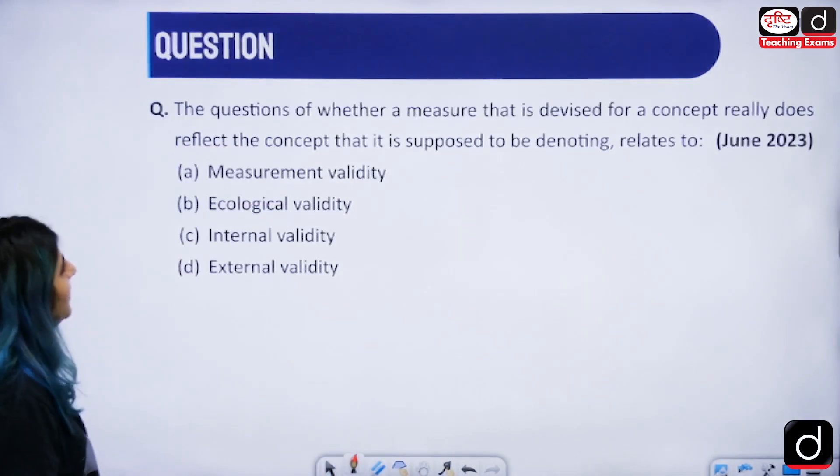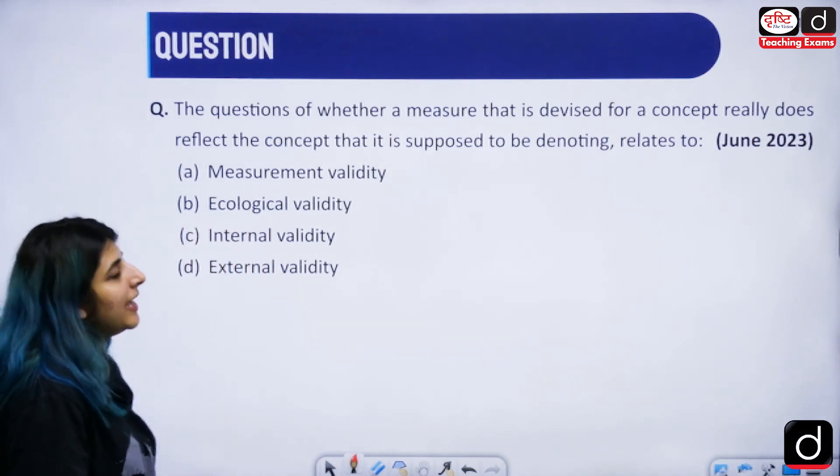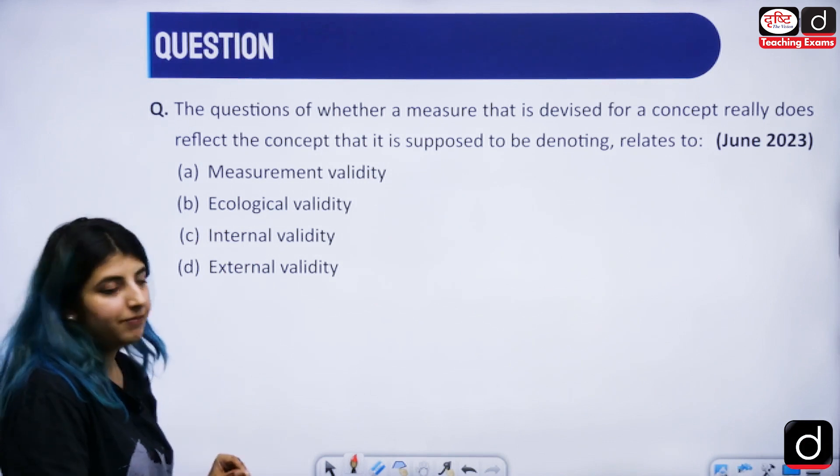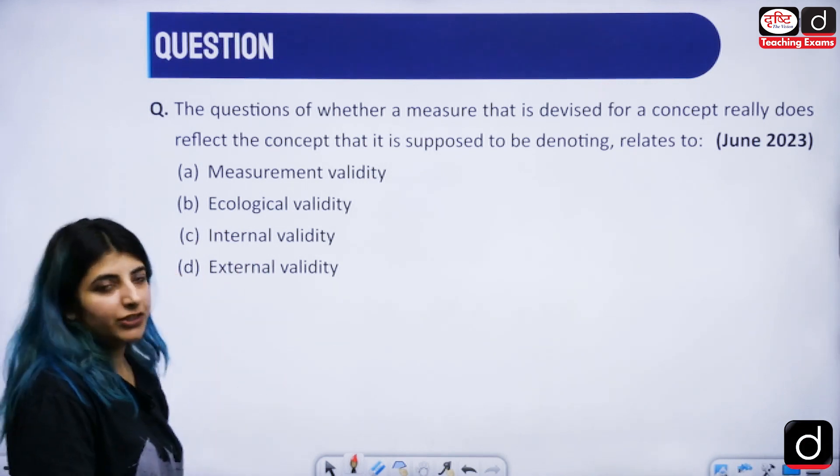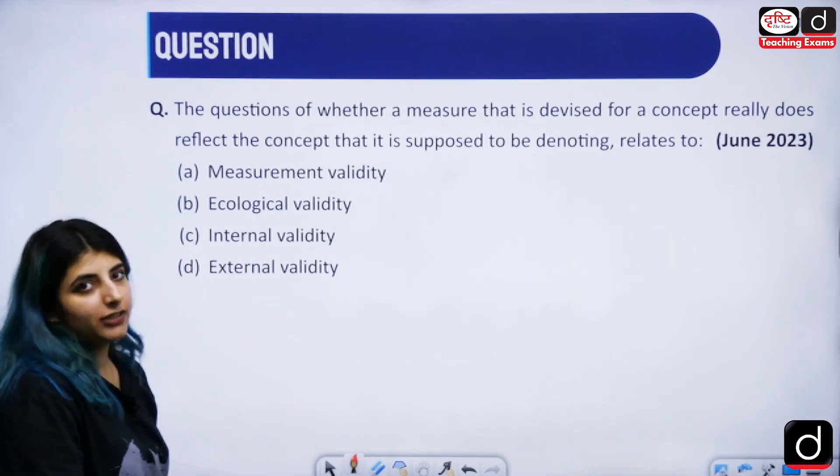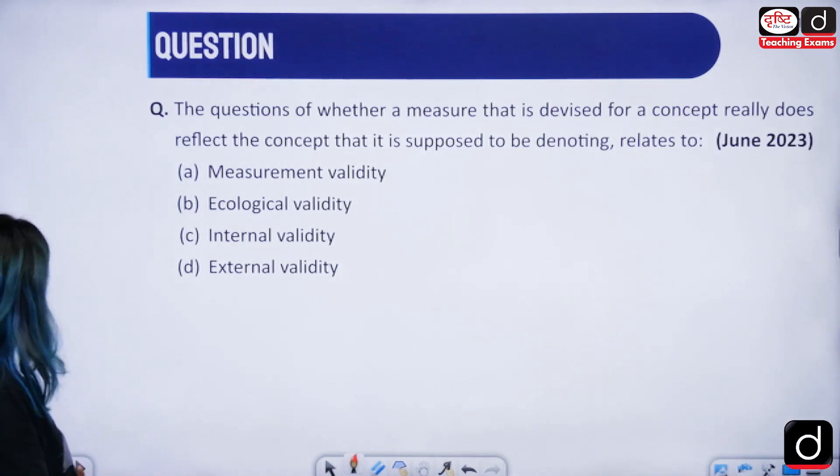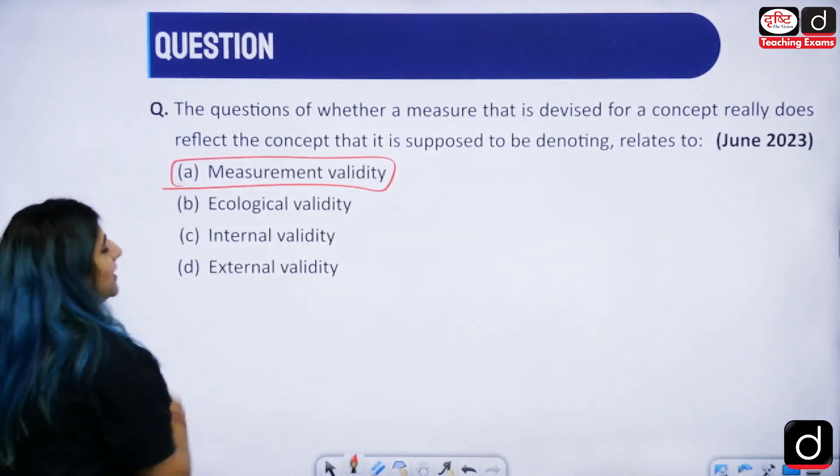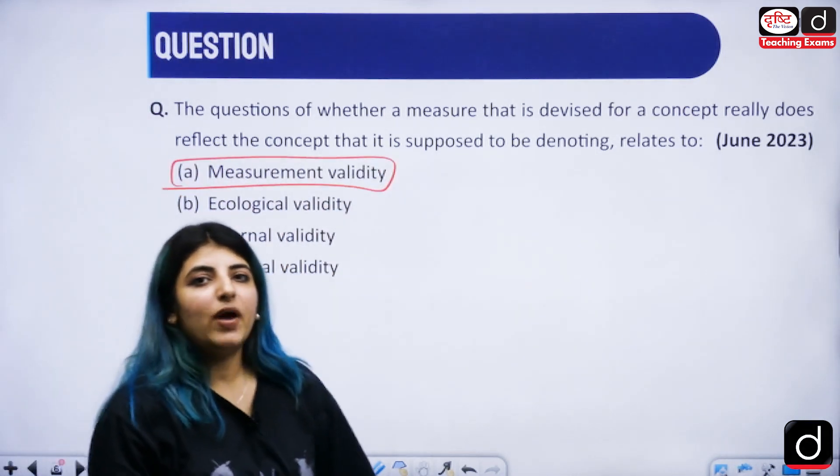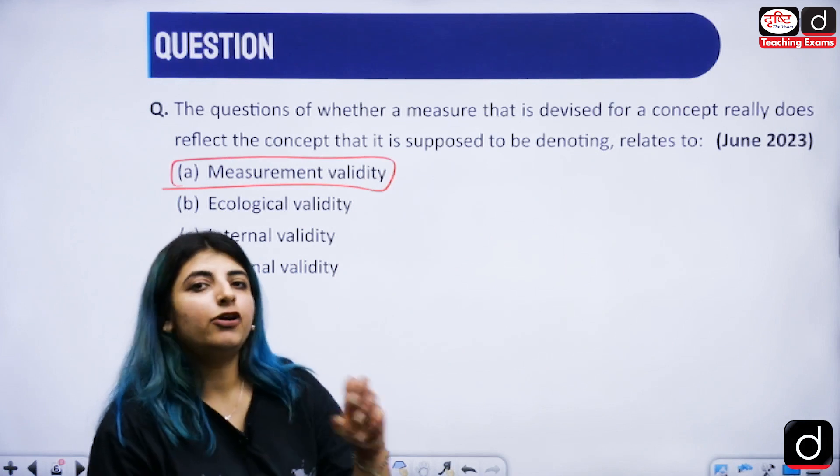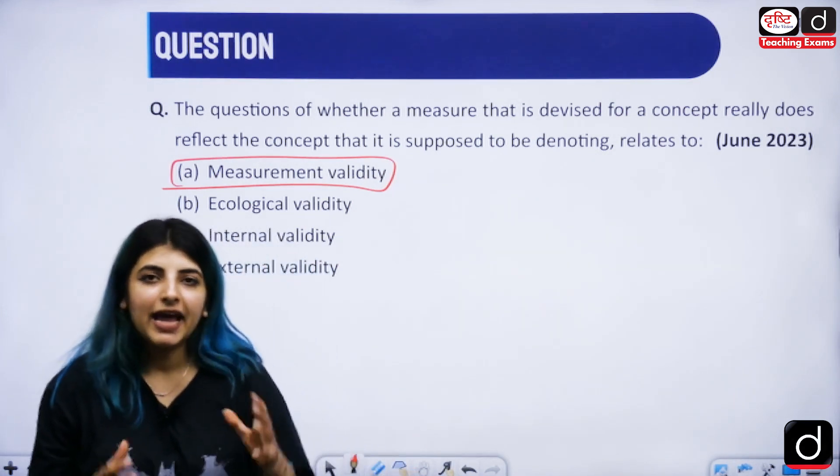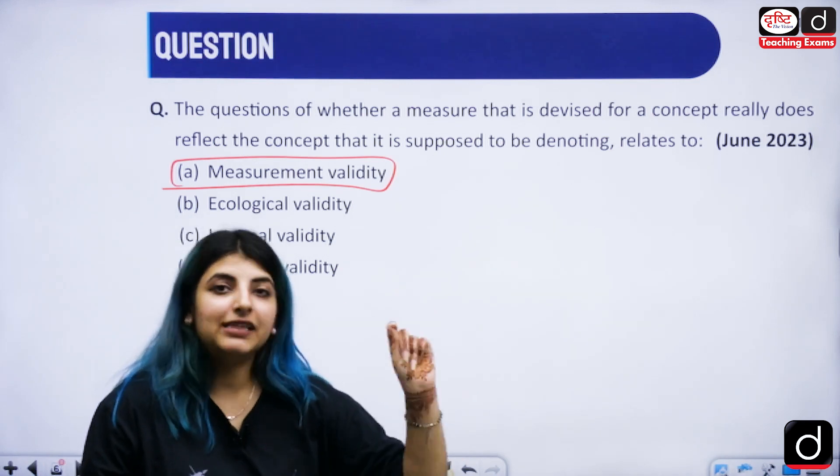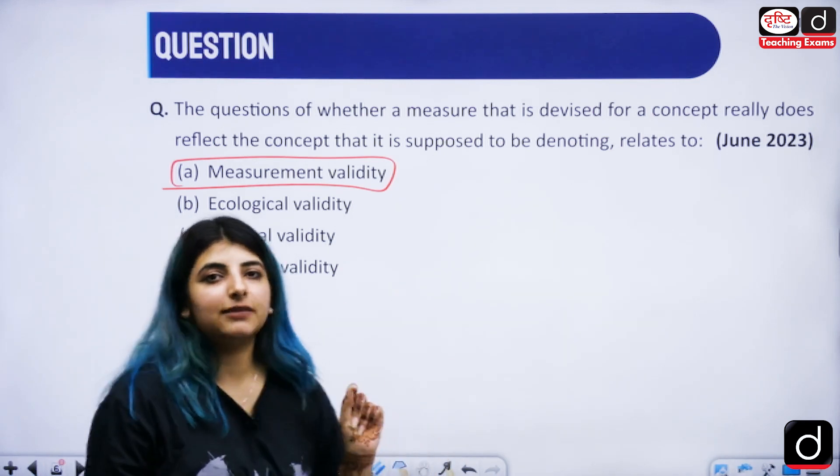The next question is: the question of whether a measure that is devised for a concept really does reflect the concept that it is supposed to be denoting, it relates to what? The answer to this question is option A that is measurement validity.